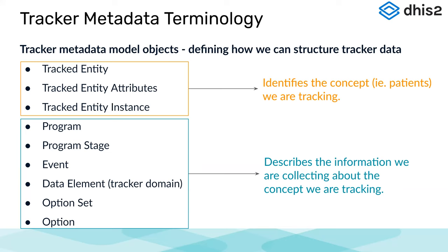Below those, we have the program, program stage, event, data elements, and option sets and options. The components highlighted in green describe the information we are collecting about the concept we are tracking. These two groups together form the components we use in order to track our various objects. Each term has something we can use to describe it, and we'll work through each now.